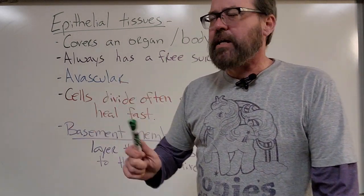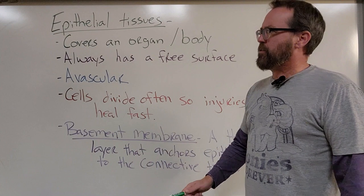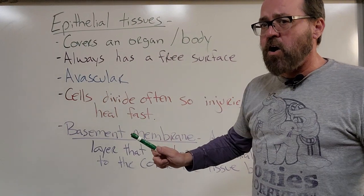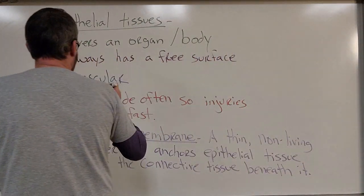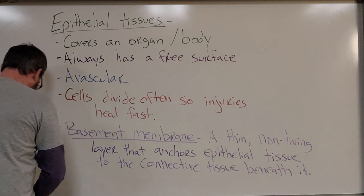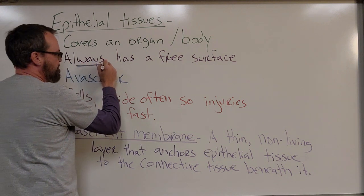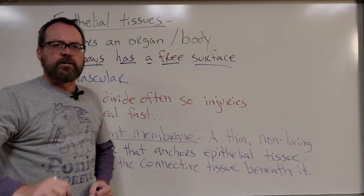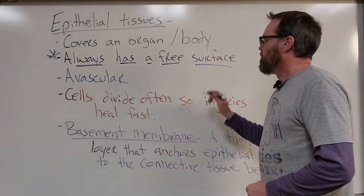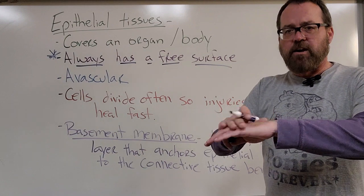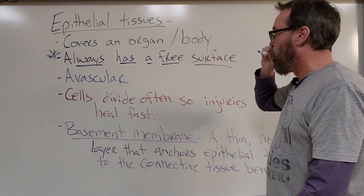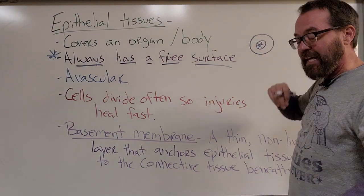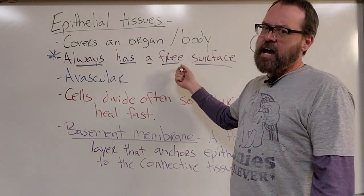Our first tissue type is epithelial tissues. Epithelial tissues cover an organ and also cover our body. One of the key things that makes epithelial tissues distinct is that they always have a free surface — that is huge. That free surface could be like the outer layer of skin, where the free surface is the outside world, or it could be the space inside of a tubular structure. But epithelial tissue always has a free surface.